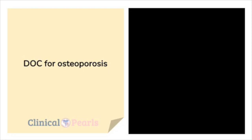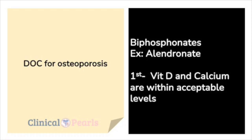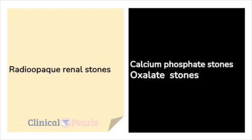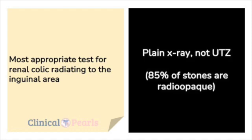Drug of choice for osteoporosis: bisphosphonates — but first make sure that vitamin D and calcium are within acceptable levels. Radio-opaque renal stones: calcium phosphate stones and oxalate stones. Most appropriate test for renal colic radiating to the inguinal area: plain X-ray, not ultrasound, because 85% of stones are radio-opaque.